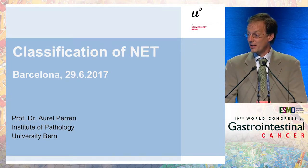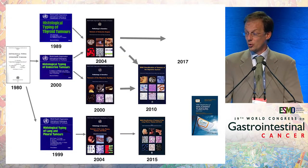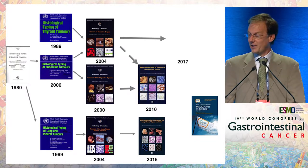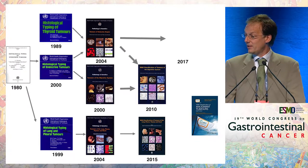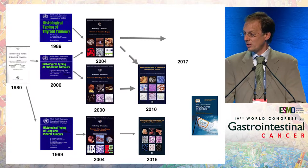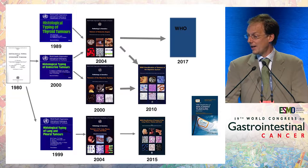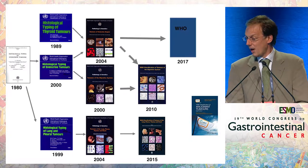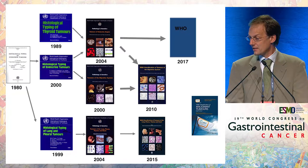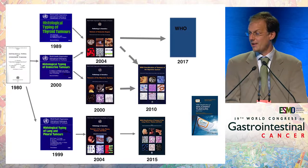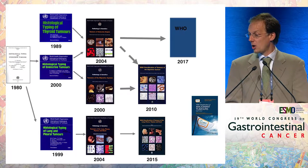I should talk about the classification of neuroendocrine tumors and tried to bring some order into the whole lot of different classifications, which have been evolving like an uncut tree over the last years. I will talk about the 2010 classification, which introduced the concept of neuroendocrine tumors and neuroendocrine carcinoma — a classification made on GI neuroendocrine tumors but also applied for pancreatic.